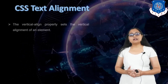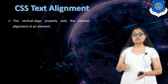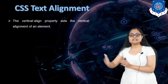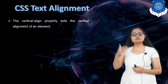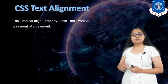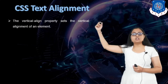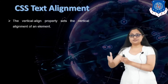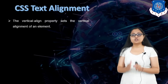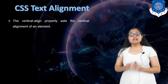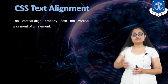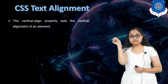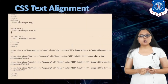Now in text alignment there are two types: the first is horizontal alignment — left, right, and center — whereas you can also give vertical alignment. The property name for vertical alignment is vertical-align, whereas for horizontal alignment it is text-align. The vertical-align property sets the vertical alignment of the text, so your text can be at top, middle, or bottom.